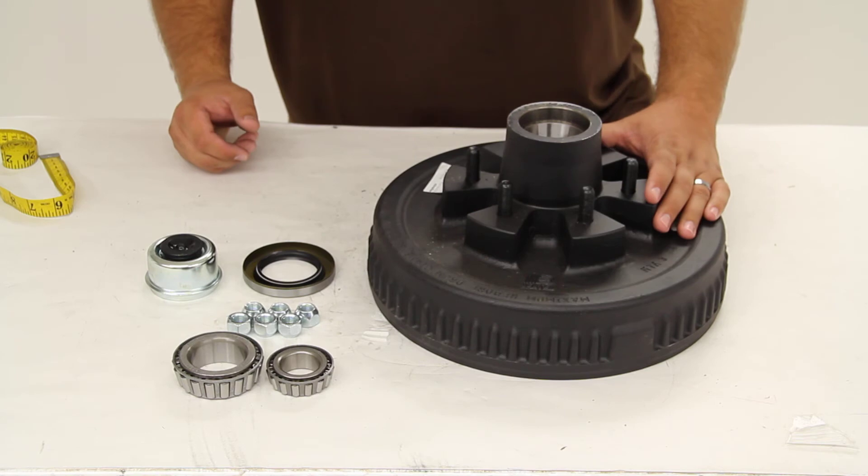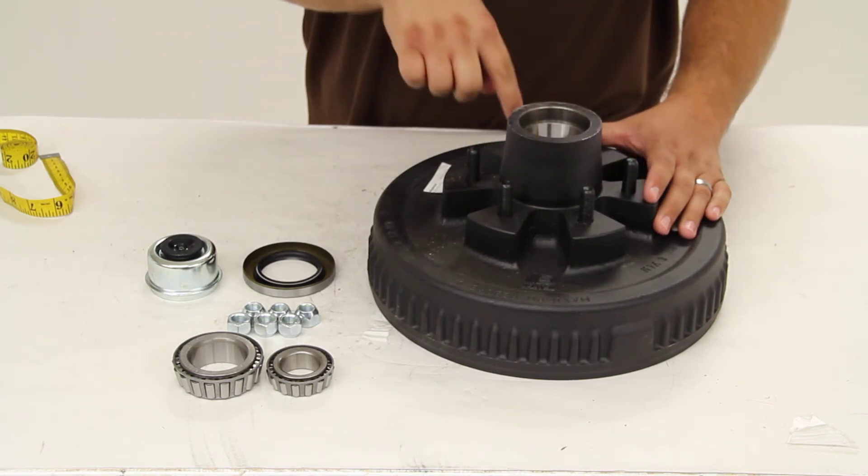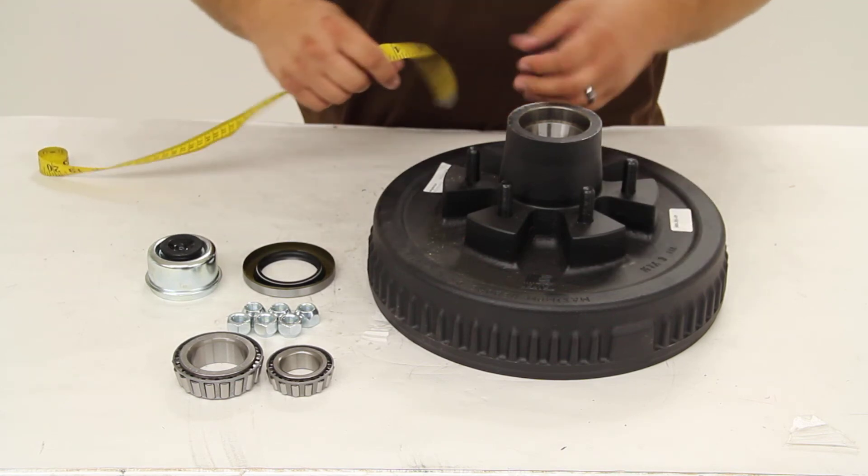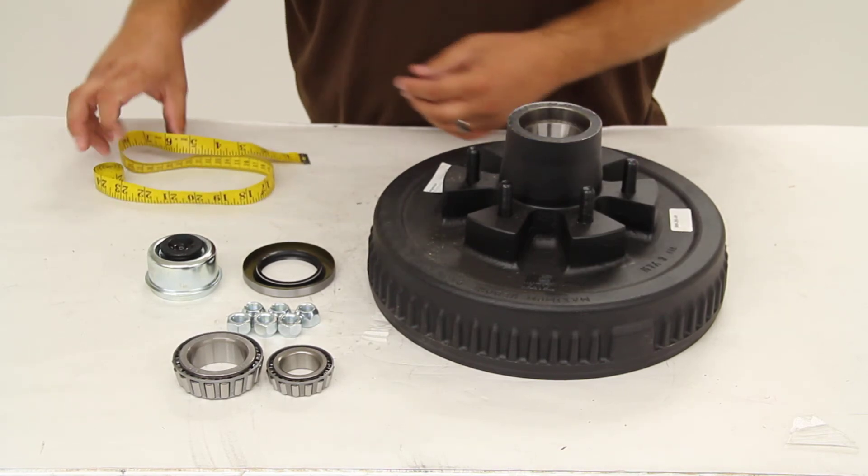The hub and drum assembly has a 6 on 5 1/2 bolt pattern. There are six lugs or six studs. And if we were able to accurately measure across from one stud directly across to the other, we'd get our 5 1/2 inch measurement.